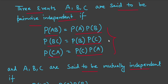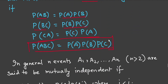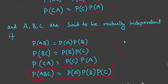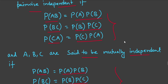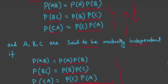From these two definitions we get an important note: mutually independent implies pairwise independent, because mutually independent has one extra condition. However, pairwise independent does not imply mutually independent. We will go through an example to illustrate this.